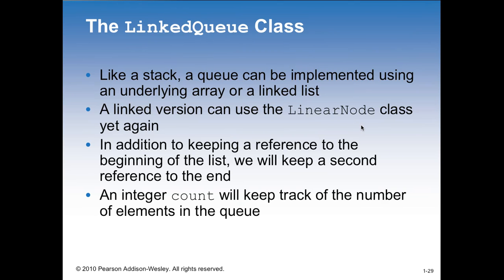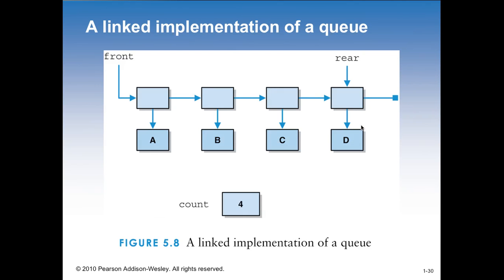So the linked queue class - like a stack, the queue can be implemented using an underlying array or a linked list. Either one would accomplish the same goal. In C or C++ I'd just use an array. In Java I'd probably use a linked list, create a linked queue because it's easier. A linked version can use the linear node class to keep track of each one of the nodes - in this case, customers. In addition to keeping track of the reference to the beginning of the list, you can also keep a second reference to the end. Your counter can keep track of the number of elements in the queue - every time you add something, increment it; every time you take something out, decrement it.